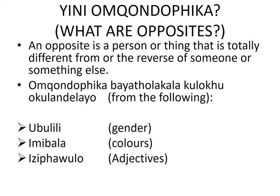We've got ubulili, which is gender. And we've got imibala, which are colors. We also get opposites from adjectives, which is easy paulo.